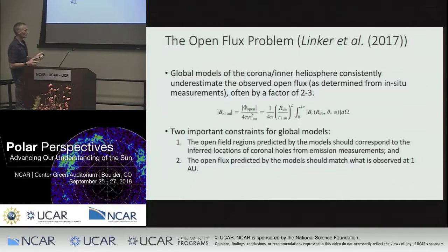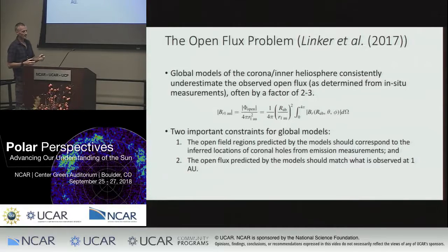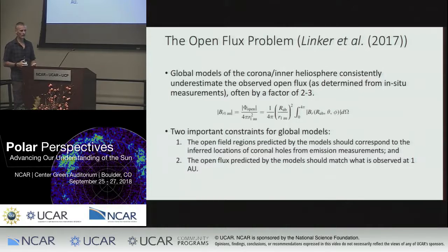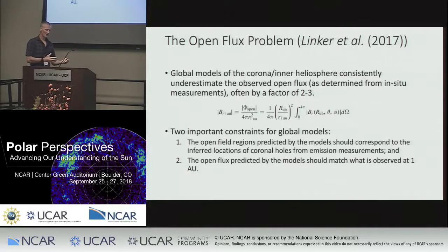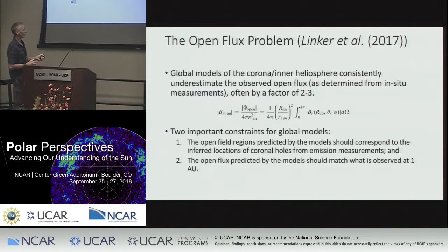From the modeling perspective, the two major constraints we have — which shows you how data-starved we are — are that we know where the coronal holes are from EUV measurements as a reasonable proxy for open and closed field boundaries. So you'd be able to compare what the model computes as coronal holes against the EUV observations. And the open flux predicted by the models should match what we see at 1 AU. Maybe it's not an exact one-to-one correspondence, but it's a fairly serious constraint that the models have to adhere to.